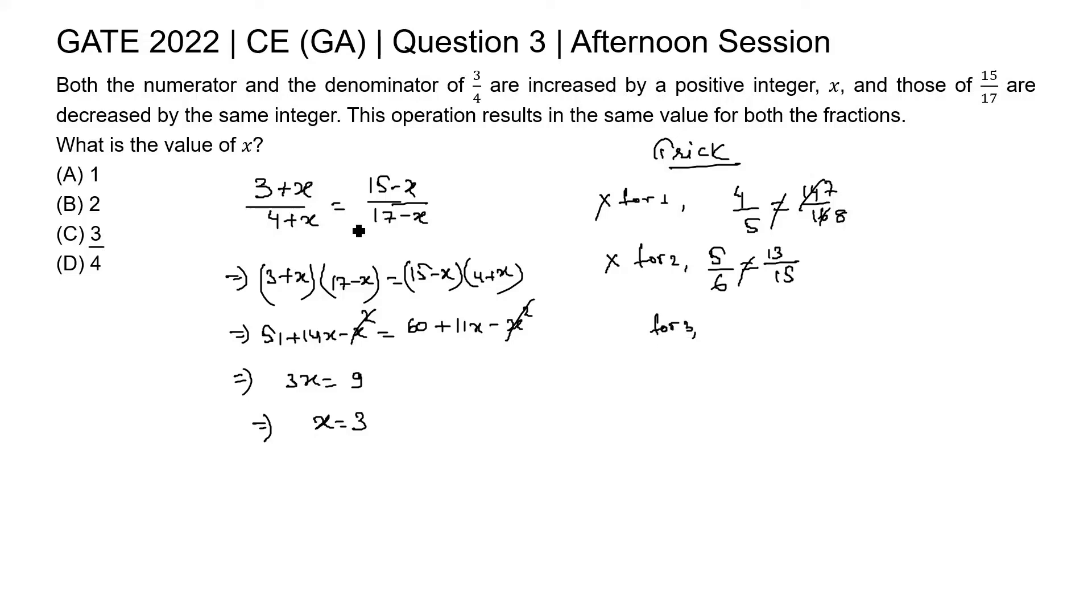If we put 3, then 3 plus 3, 6 and 4 plus 3, 7 and 15 minus 3 is 12 and 17 minus 3, 14. 12 by 14 can be written as 6 by 7. This 6 by 7 and 6 by 7 is equal in both the sides, so we can say option 3 is satisfying this equation. Option 3 is the correct answer and the correct value of x.